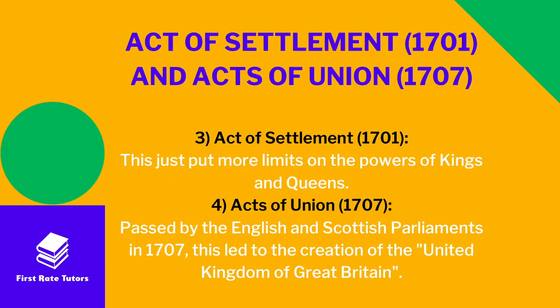The third document is the Act of Settlement of 1701, and we can see it almost as an update to the Magna Carta. It simply put more limits on the powers of kings and queens in the UK.